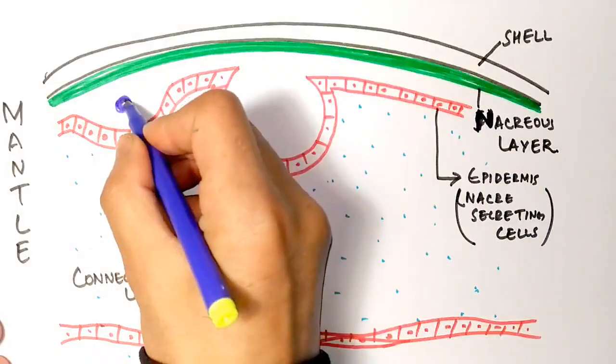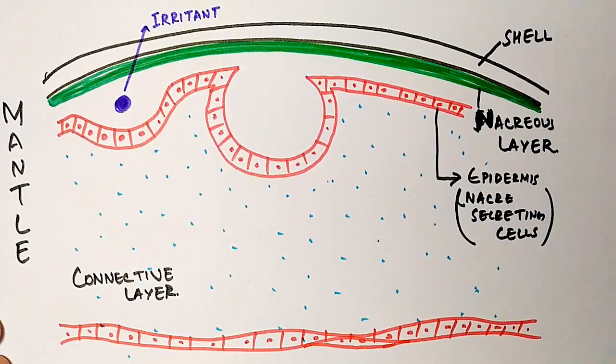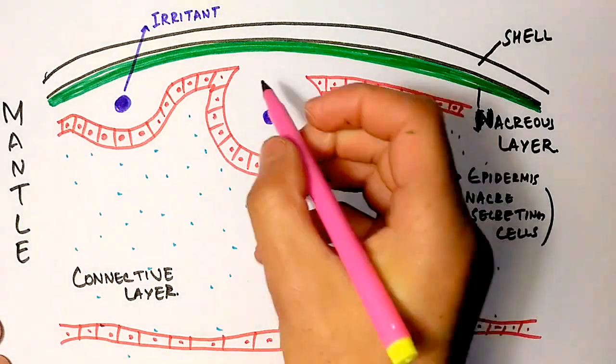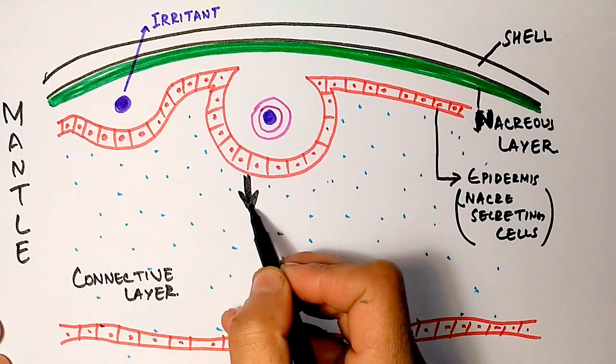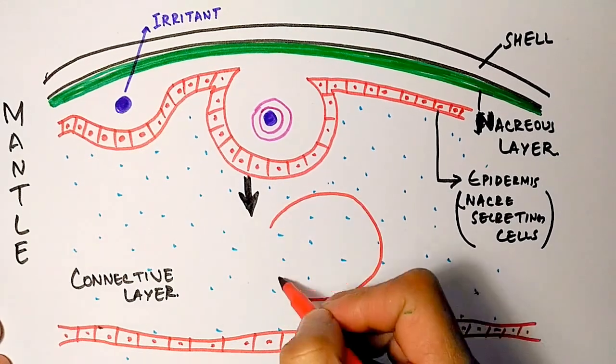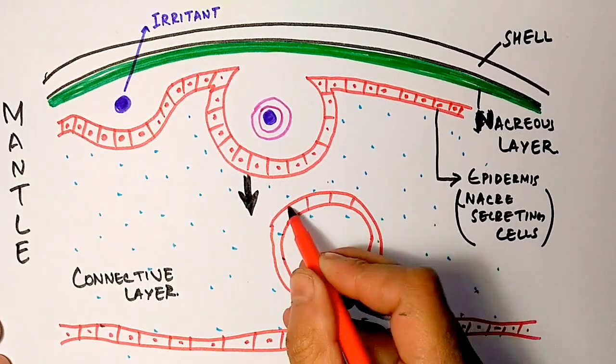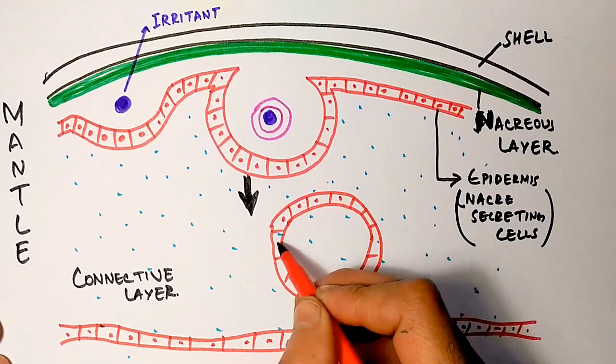Now let's suppose a sand particle which is an irritant makes way between nacre layer and epidermis layer or sometimes it gets stuck here. After it remains there for some time, the organism senses it and starts secreting nacre layer from epidermis cells in the form of concentric layers like this. Then this irritant starts protruding the nacre layer and ultimately it detaches it from epidermis layer thereby creating a pearl sac.